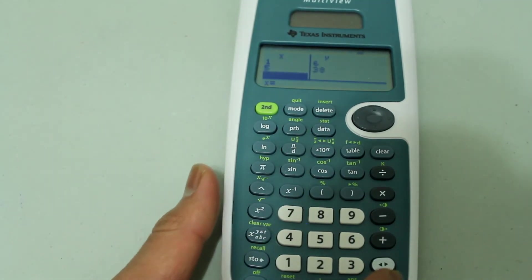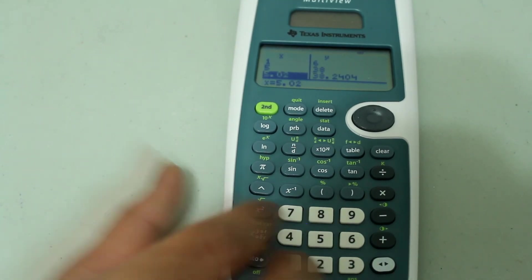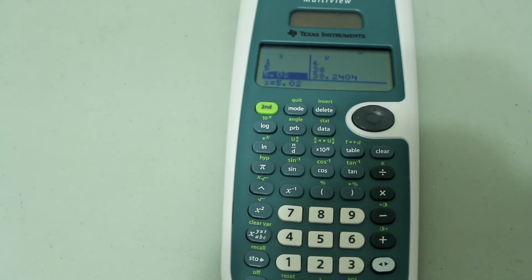And 5, enter. 5.02, enter. This allows you to manually build your table according to what you need instead of having to go up by certain increments.